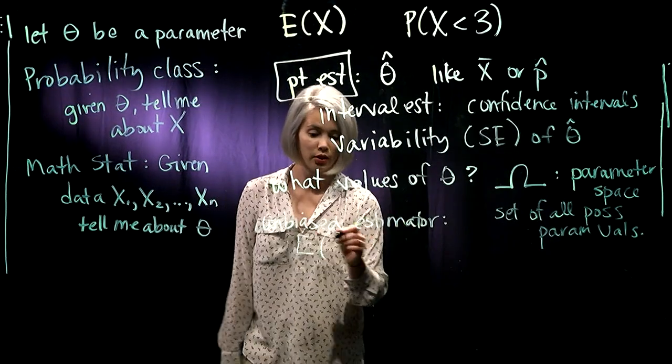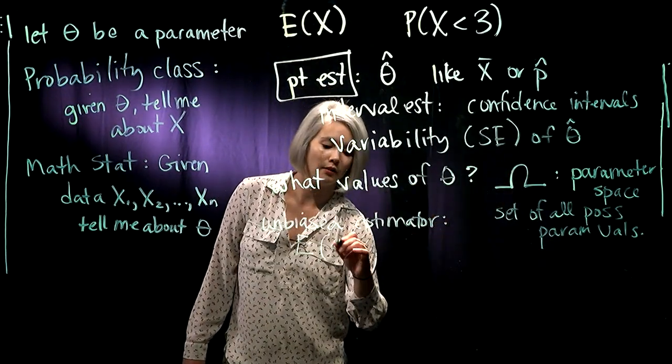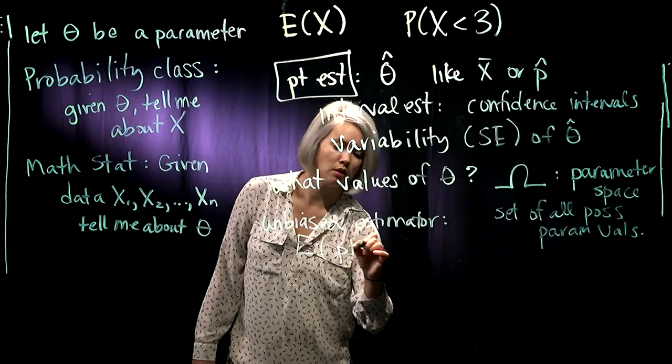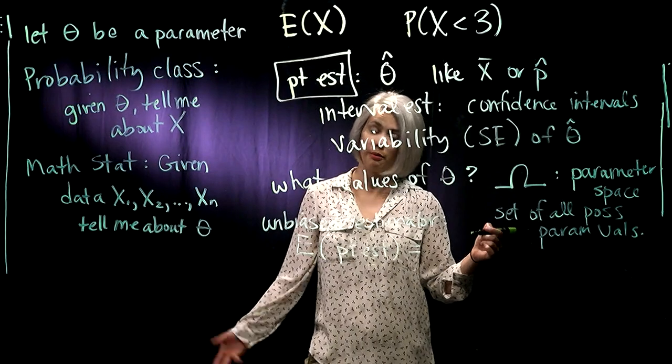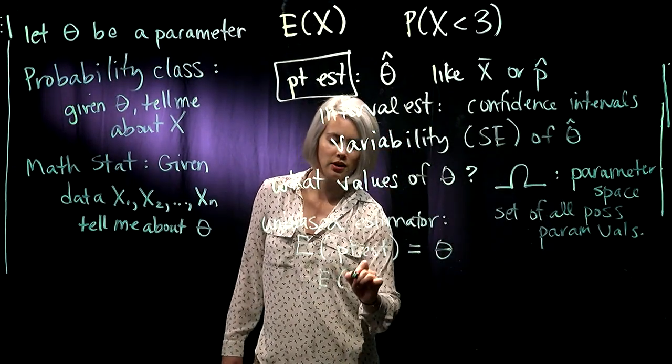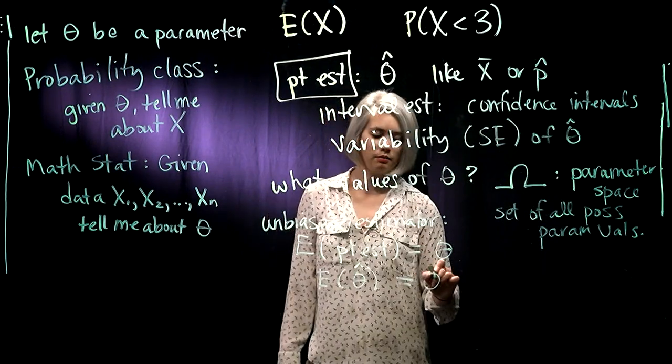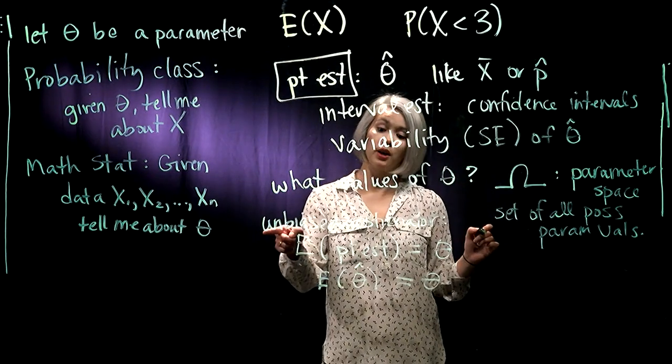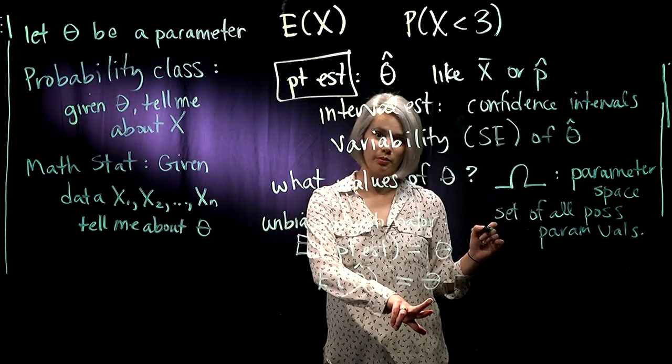In other words, we're talking about, on average, we're looking at the expectation because that's our long-run average of our point estimate. We want that to be equal to whatever parameter we're estimating. If we want to write that with notation, expectation of θ̂, we want that to be equal to θ. If we have an unbiased estimator, the expectation of our point estimate is equal to our parameter.